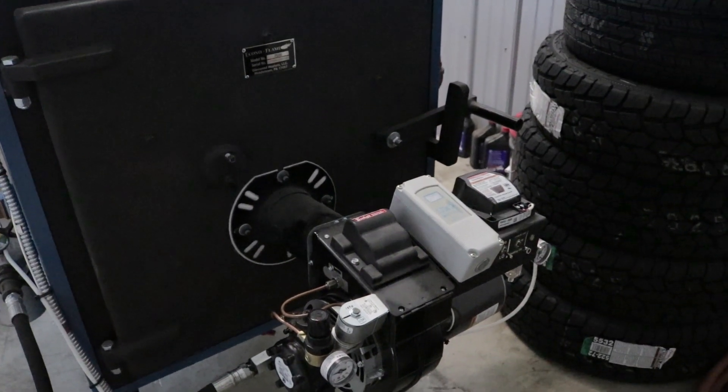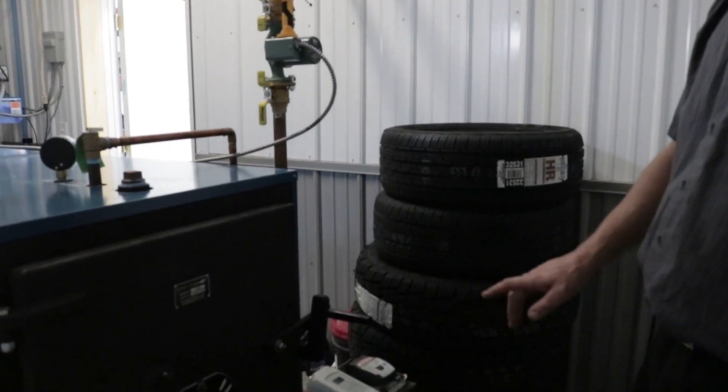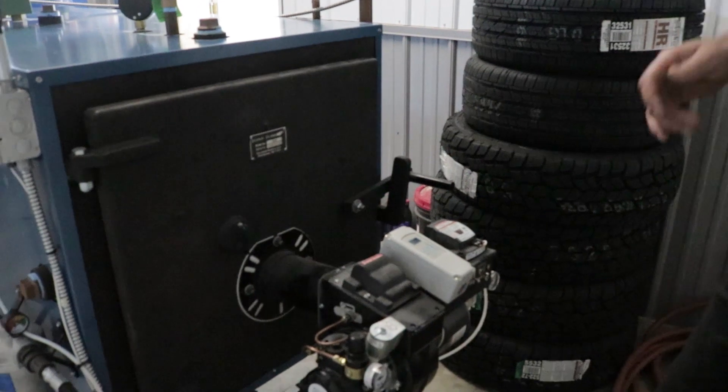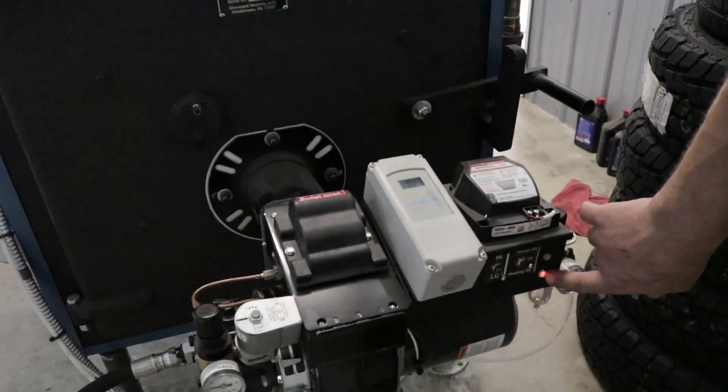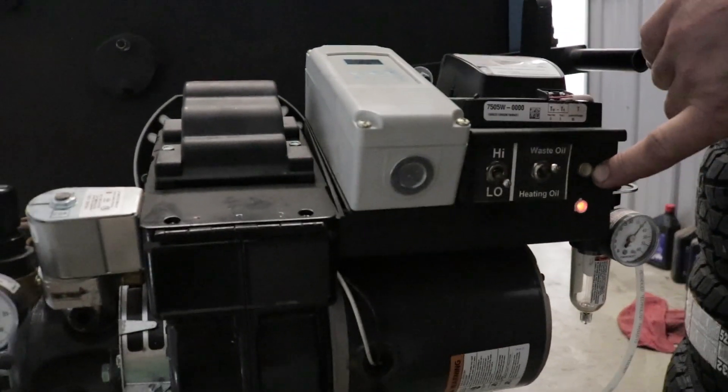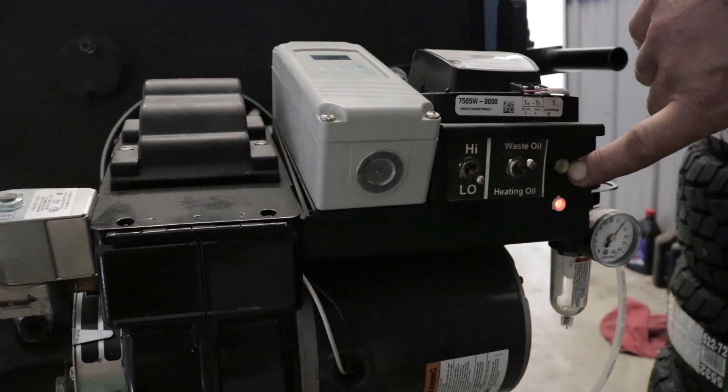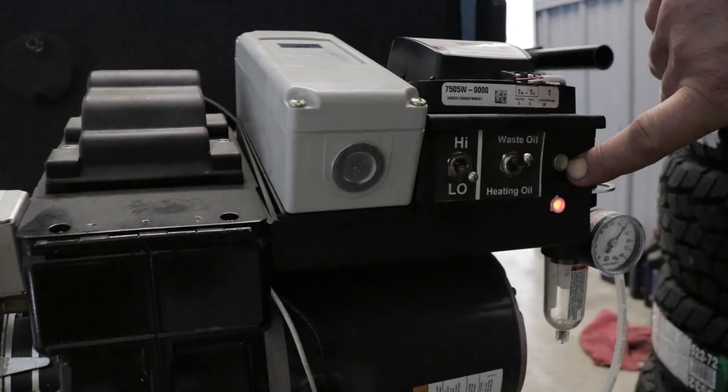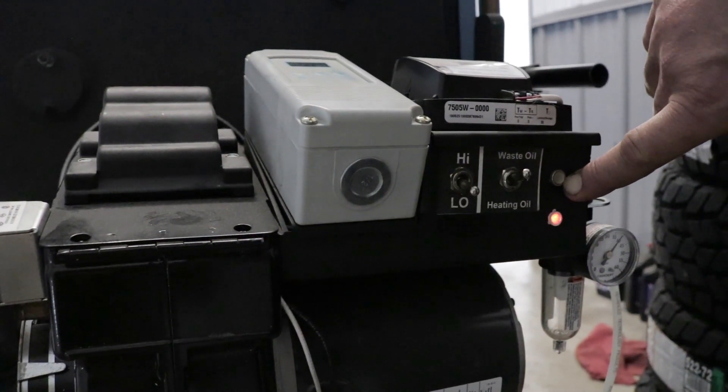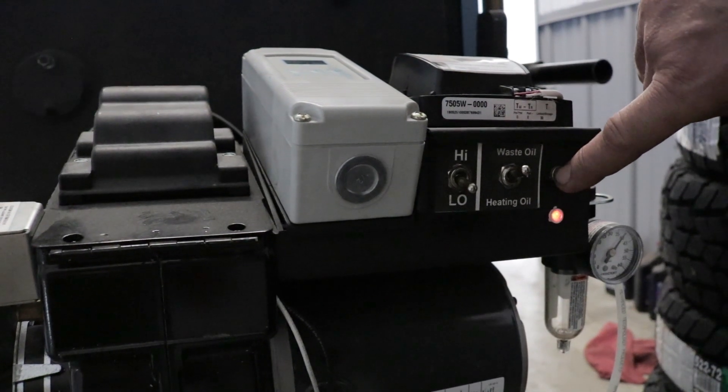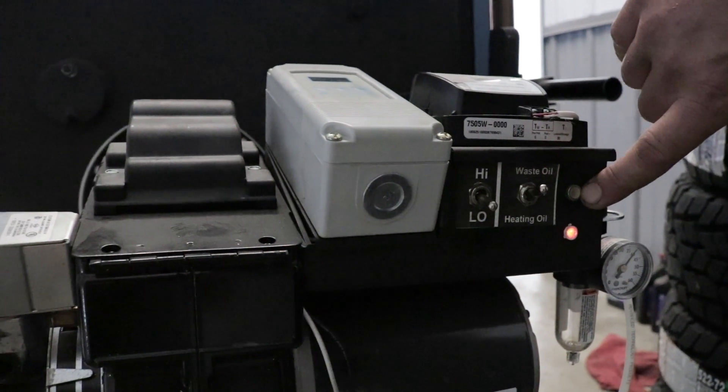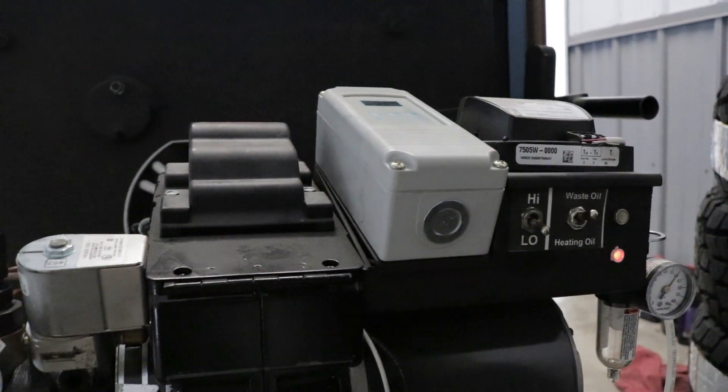There are indicator lights on the burner that tell you when what is functioning. The red light tells you the preheaters are functioning. The green light will tell you that the burner is in run mode. It may not necessarily be running, but it will be in run mode. The times when the green light will be on when the burner is off is if the boiler is satisfied—it's not calling for heat.